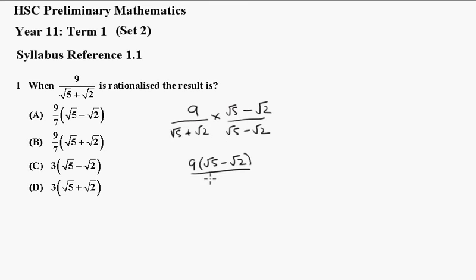Root 5 by root 5 is 5, and root 2 by root 2 is minus 2, and the middle terms will drop out.